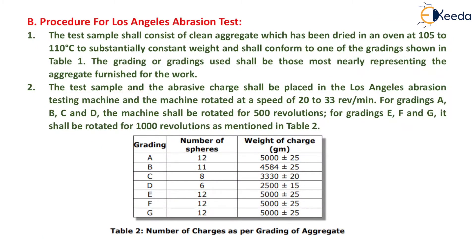The test sample and the abrasive charge shall be placed in the Los Angeles abrasion testing machine and the machine rotated at a speed of 20 to 33 revolutions per minute. For gradings A, B, C, and D, the machine shall be rotated for 500 revolutions. For gradings E, F, and G, it shall be rotated for 1000 revolutions. For Grade A aggregate, the number of steel spheres required is 12 and weight equals 5000 ± 25 grams. For other grades B, C, D, E, F, and G, the number of spheres and weight of charge are specified in the table.